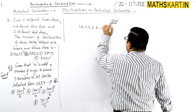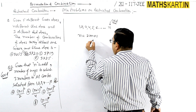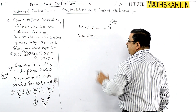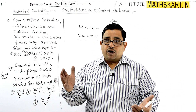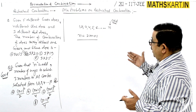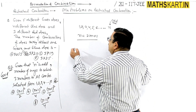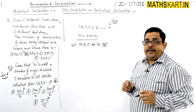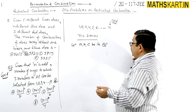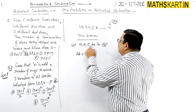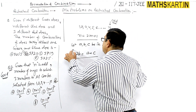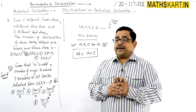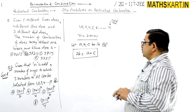Since n is odd, let us take n = 2m + 1 format, which is definitely an odd number. Let a, b, c be in AP. The property of AP is that the middle number's double equals the sum of the two extreme numbers, i.e., 2b = a + c.